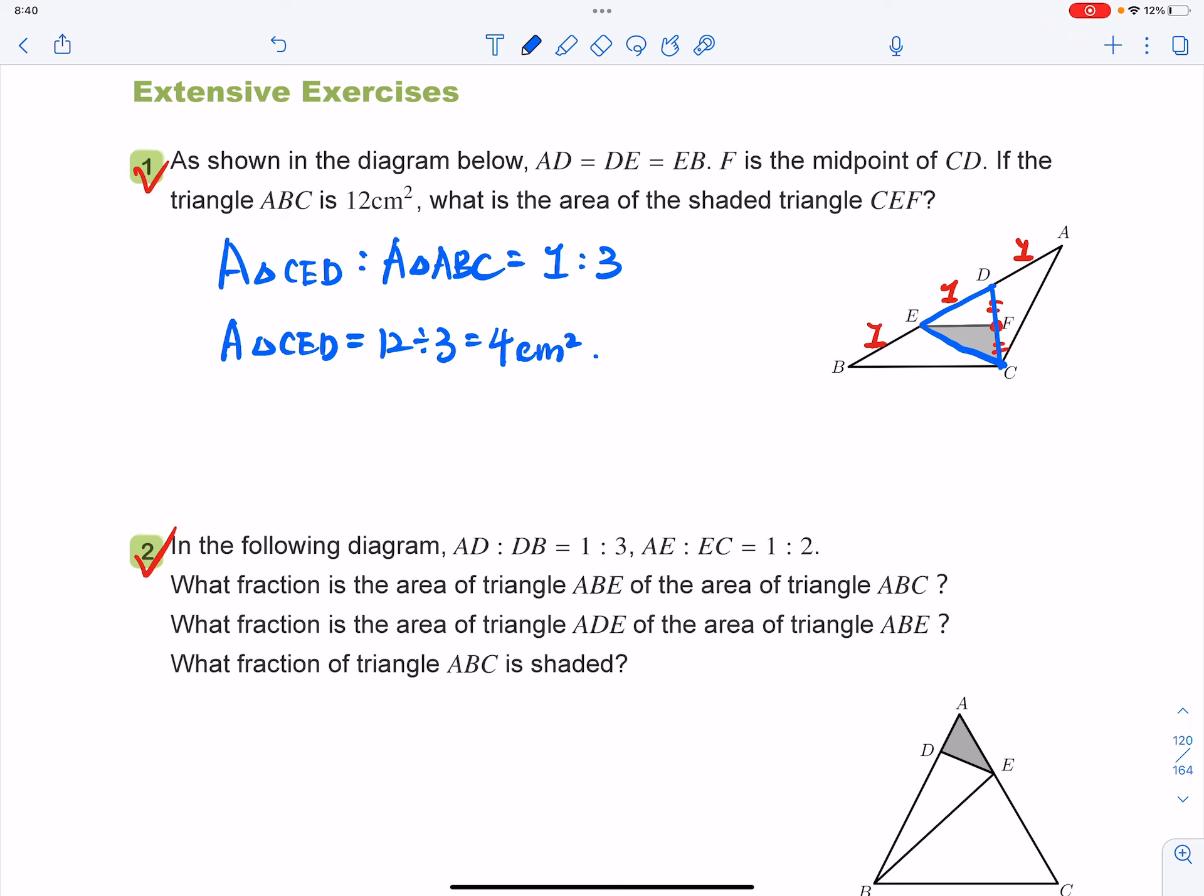Since we know the area of CED, and we know that in that CED, F is the midpoint of CD, that means EF will cut triangle CED into two parts, and the area of each part equals to each other.